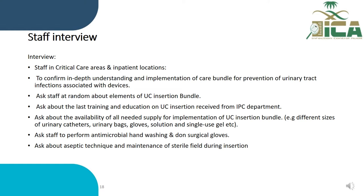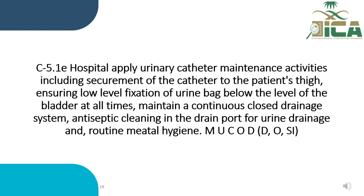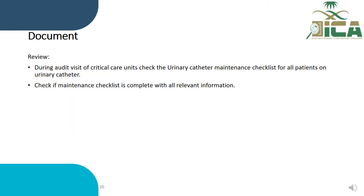Check if the hospital properly applies urinary catheter maintenance, such as securing the catheter up to the patient's thigh, fixing the urine bag below the level of the bladder, maintaining a continuous closed drainage system, and antiseptic cleaning in the drain port and routine meatal hygiene — assessed through documents, observations, and staff interviews. During audit visits, check if the urinary catheter maintenance checklist is complete with all relevant information.